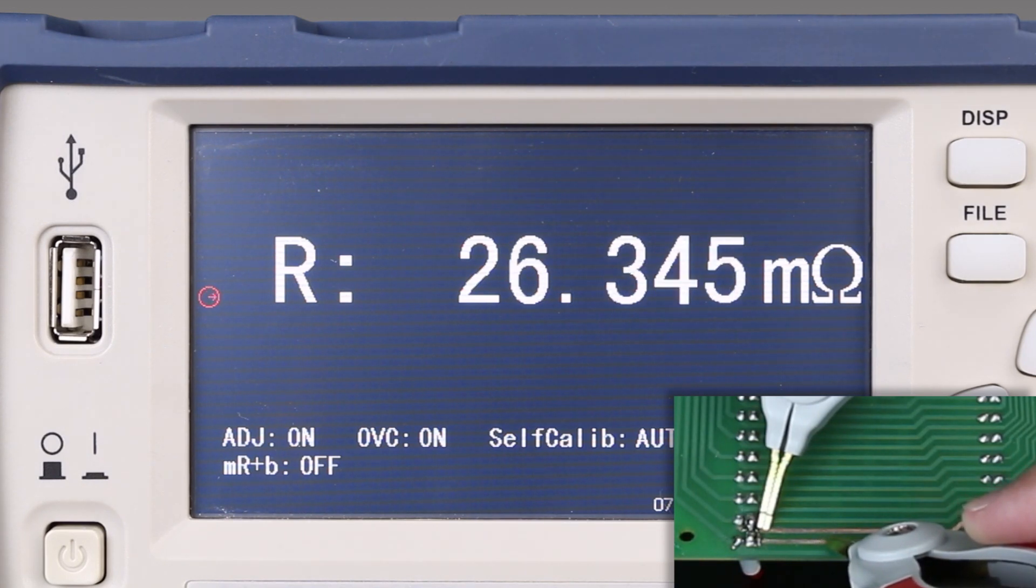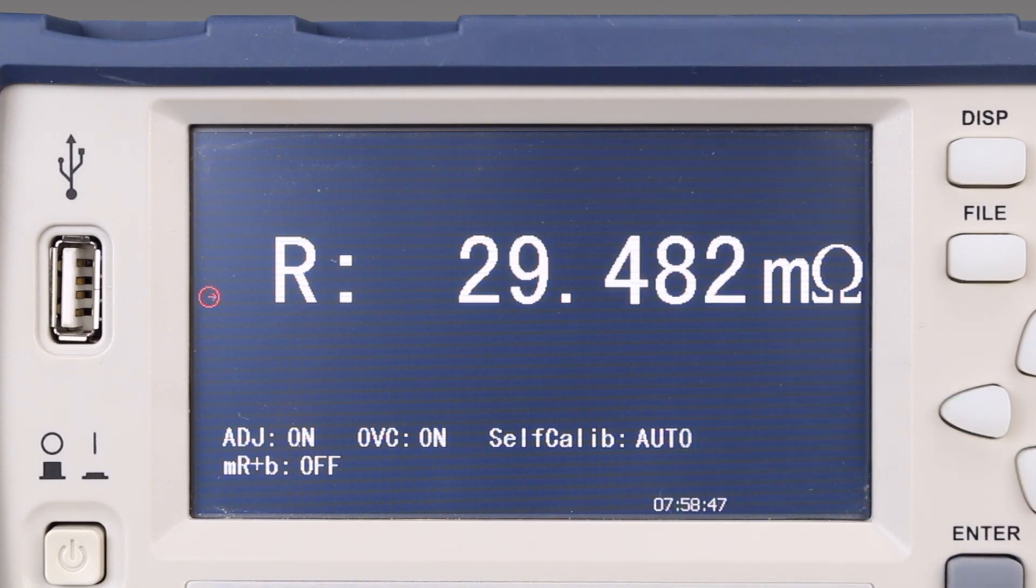Moving the test lead, we see the resistance increasing. This indicates we're moving farther away from the short.